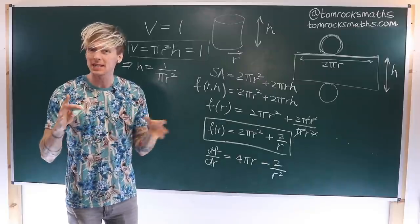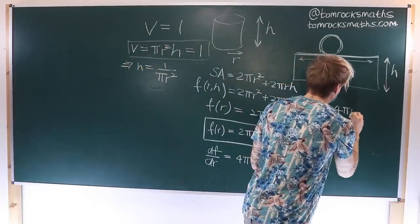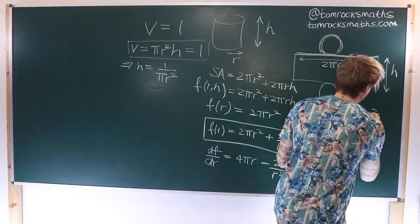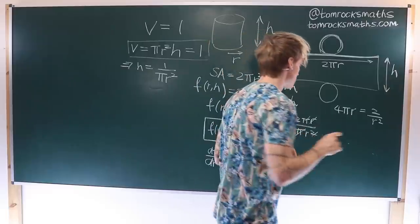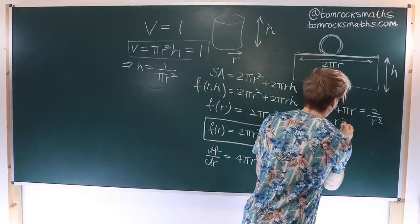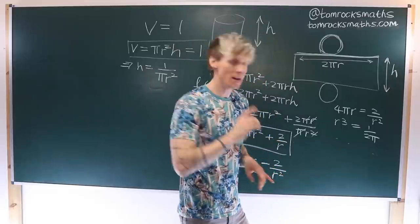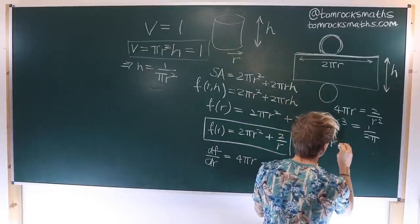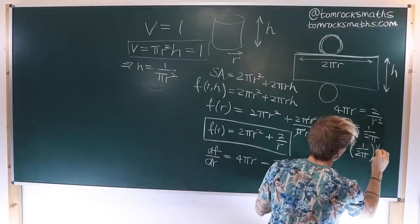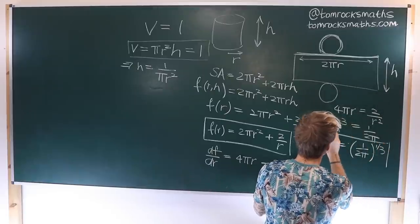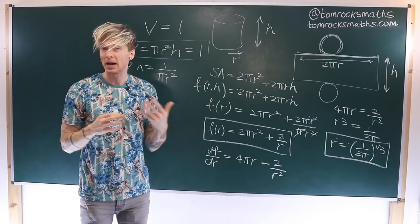Setting the derivative equal to 0, we get 4πr has to be equal to 2/r². We can rearrange this to get r³ = 1/(2π), and so our radius r has to be equal to (1/(2π))^(1/3). So our radius is the cube root of 1 divided by 2π.